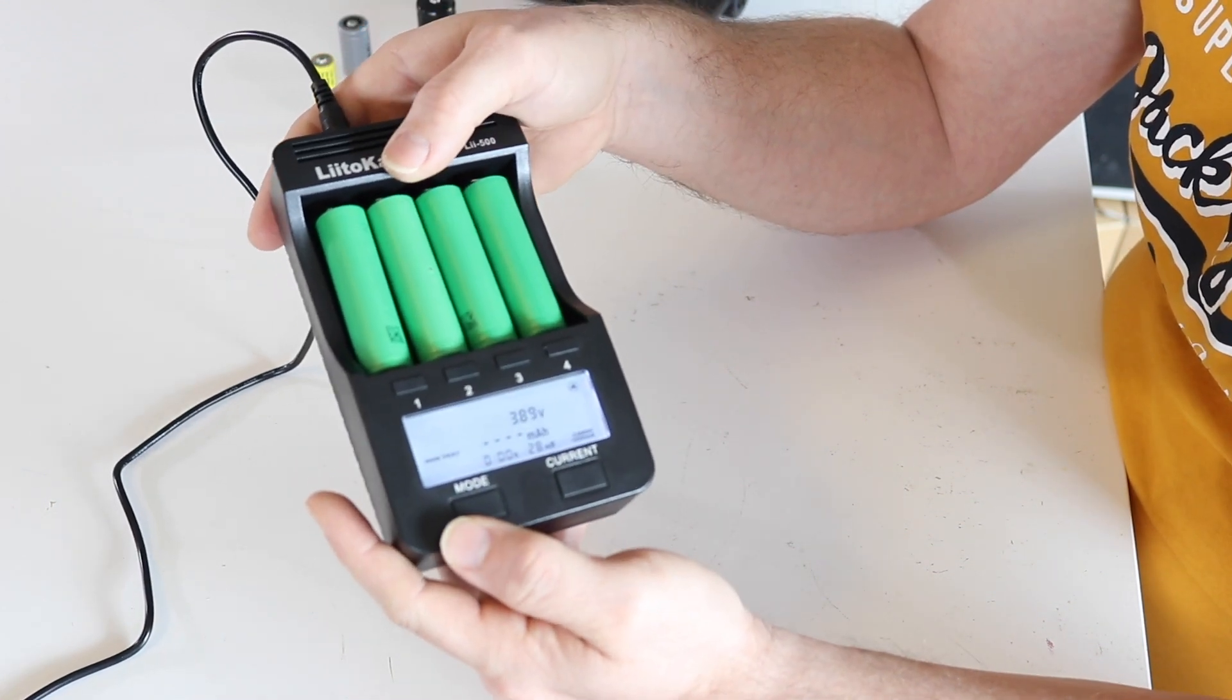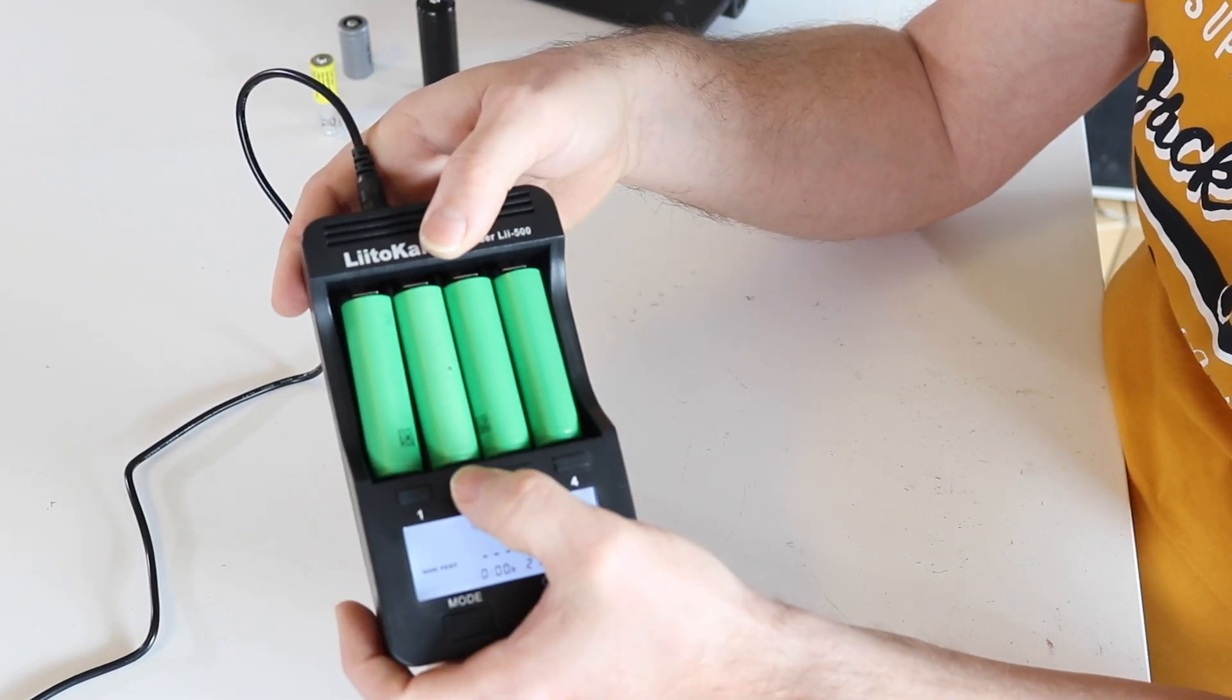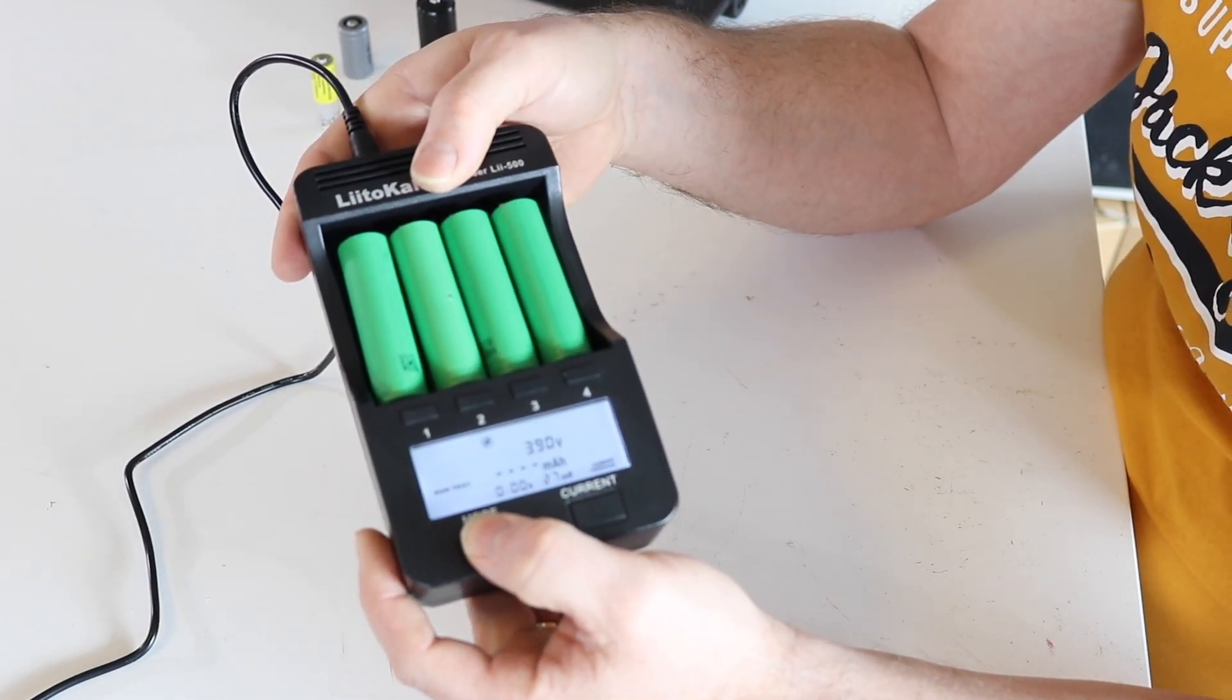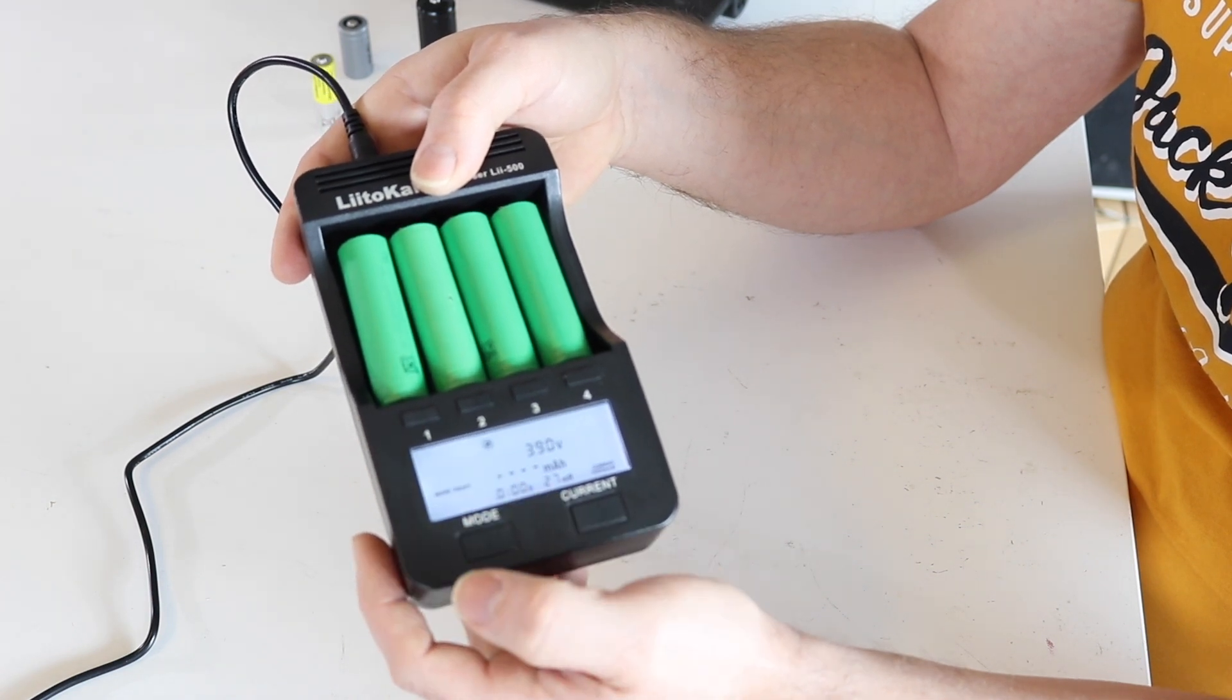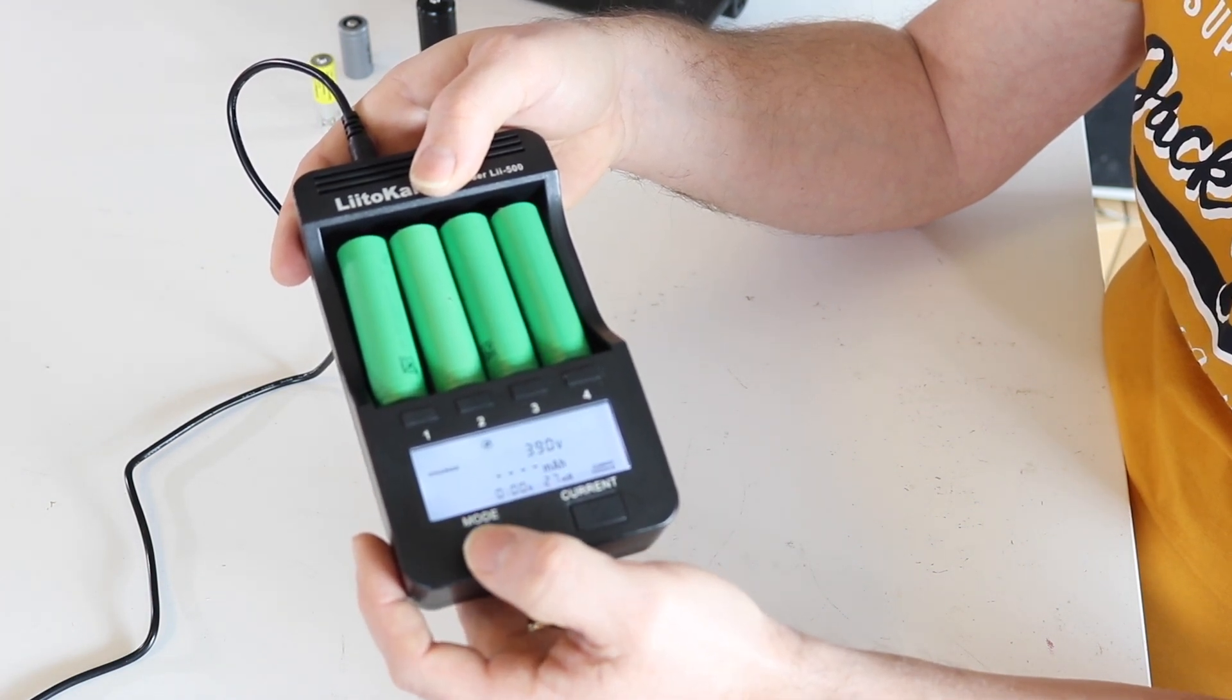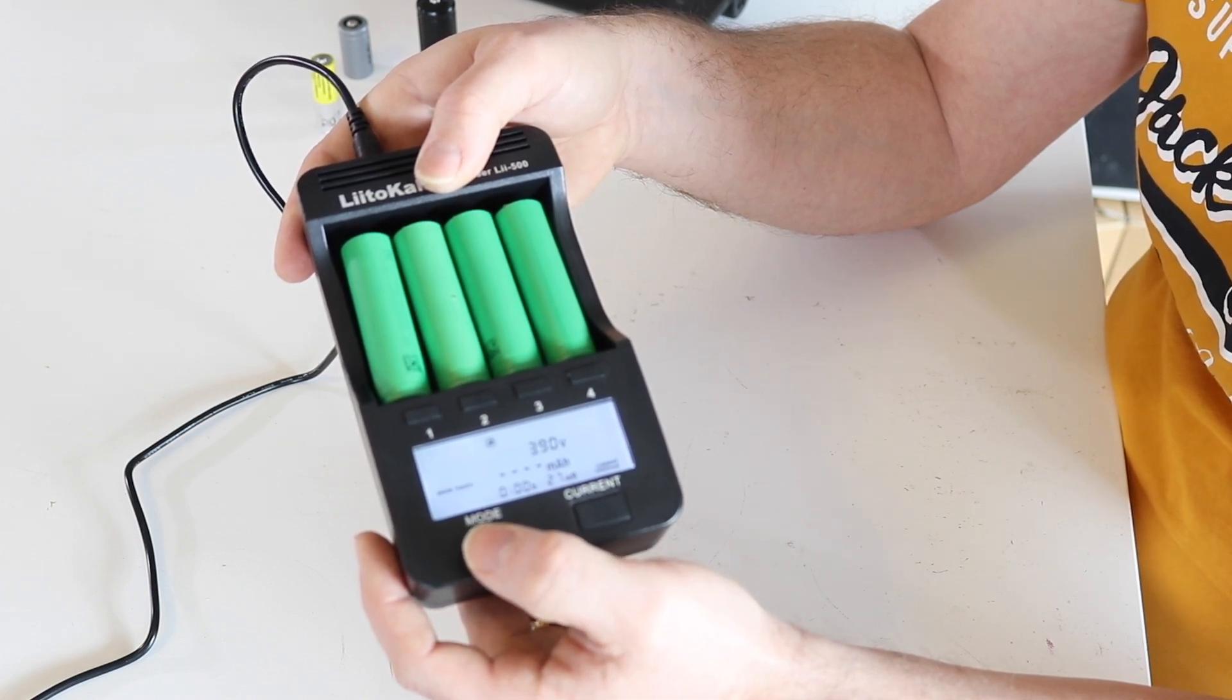If you say, okay, now I want for slot 2 something else, you just push button 2, you keep pushing the mode button so it blinks, and now you can change—okay, no, I want to charge, or I want to fast test, or normal test.